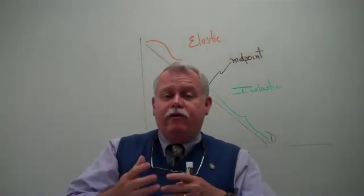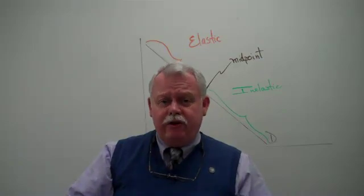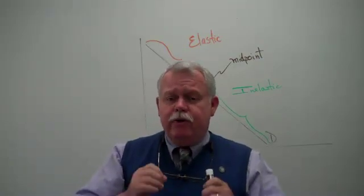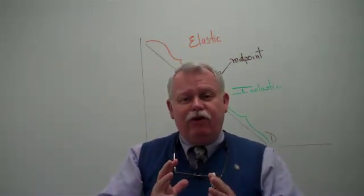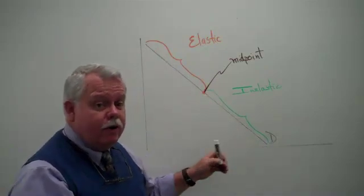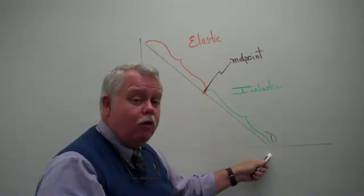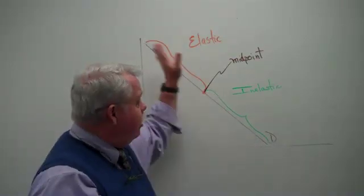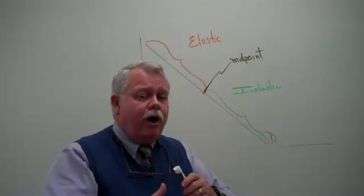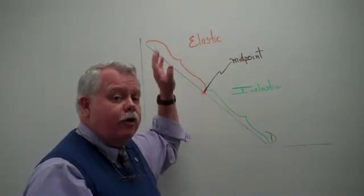We finished calculating the price elasticity of demand. Now let's look at how that price elasticity changes over the demand curve. We're using a straight line demand curve because it makes life a little easier — conceptually extending all the way from the price axis all the way to the quantity axis. How does the price elasticity of demand change as I move down or up the curve?